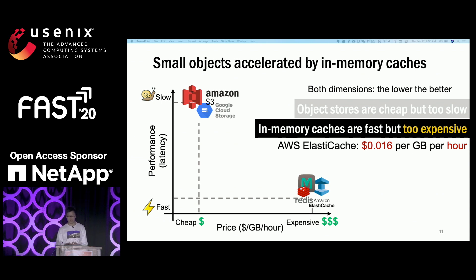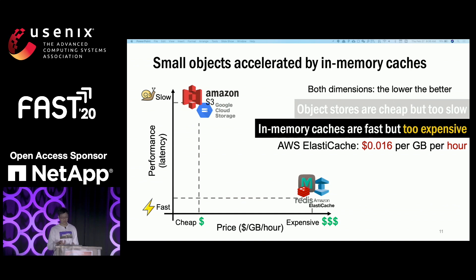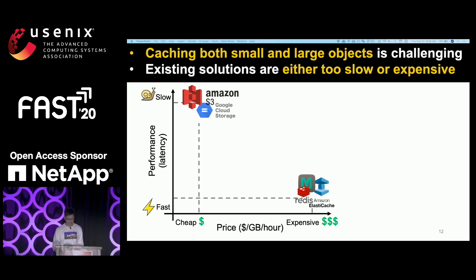But cloud tenants need to compromise on long latency since object storage cannot deliver the best performance. On the contrary, small objects are cached and accelerated by in-memory caching systems such as Redis and Memcached. But those in-memory cached services are not cost-efficient — AWS Elastic Cache charges around 2 cents per gigabyte per hour. If we want to cache large objects in-memory, the large ones will occupy most memory and cause eviction of small objects, creating a dilemma where caching both is challenging because services are either too slow or too expensive.